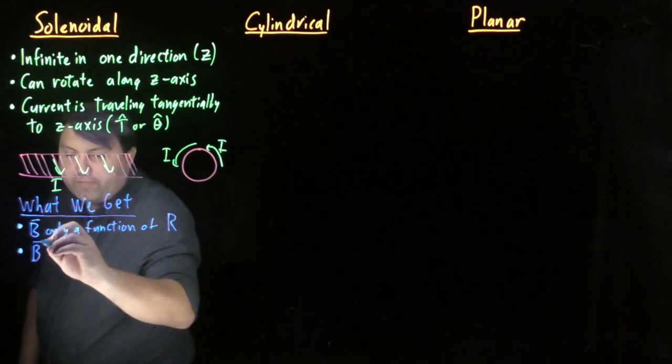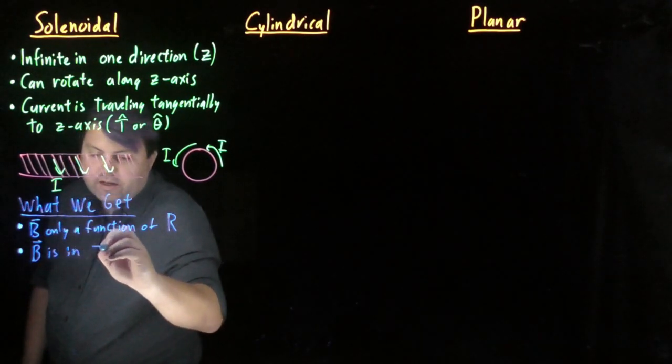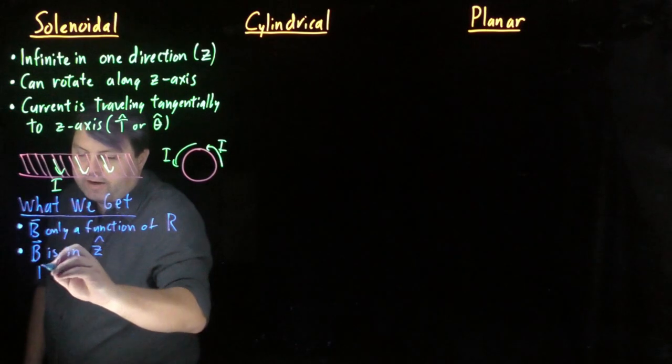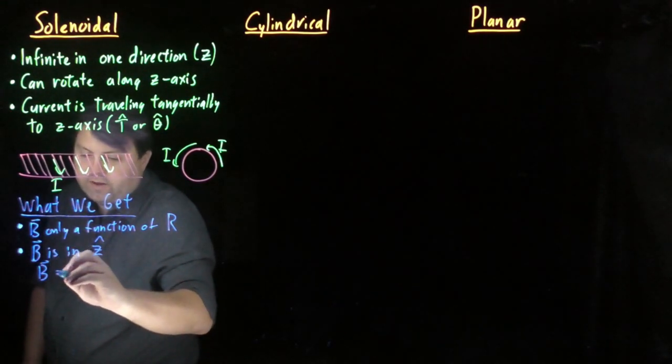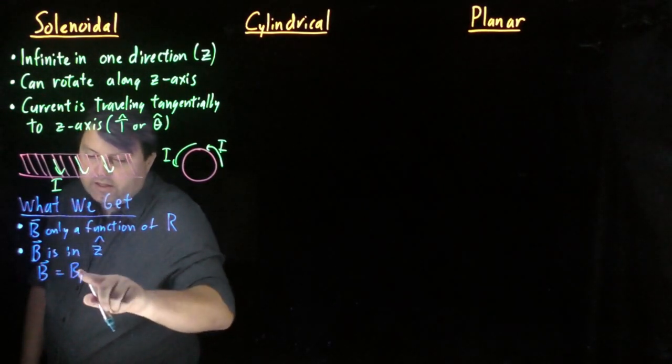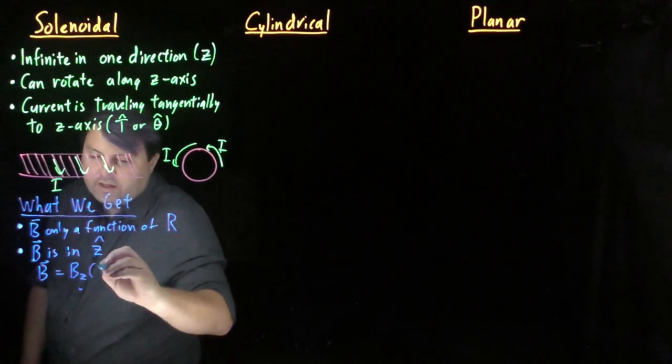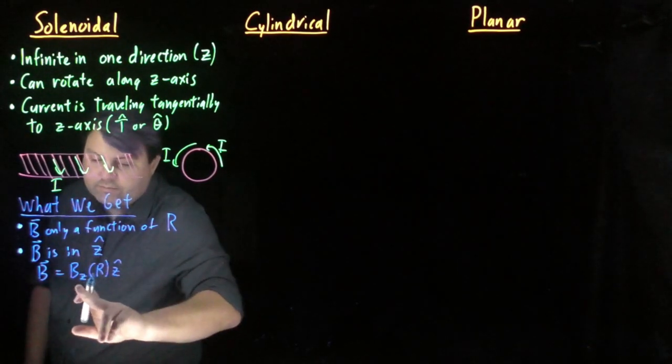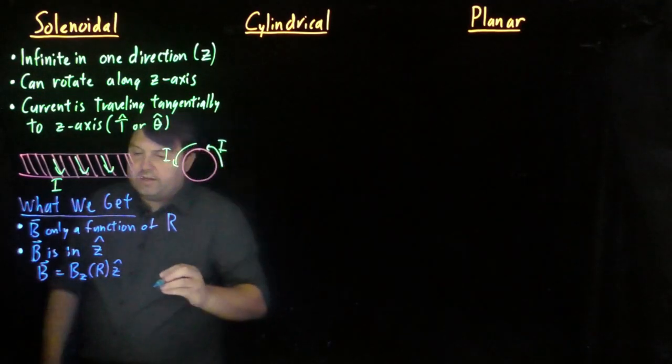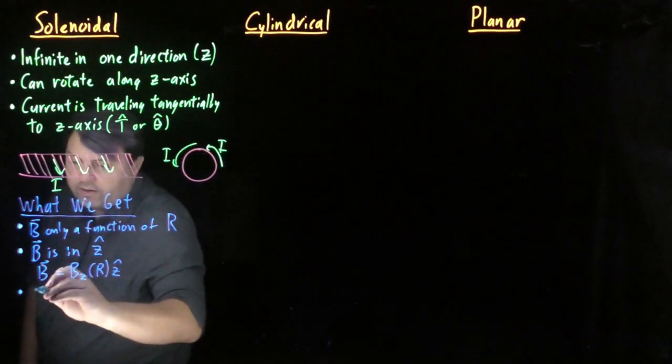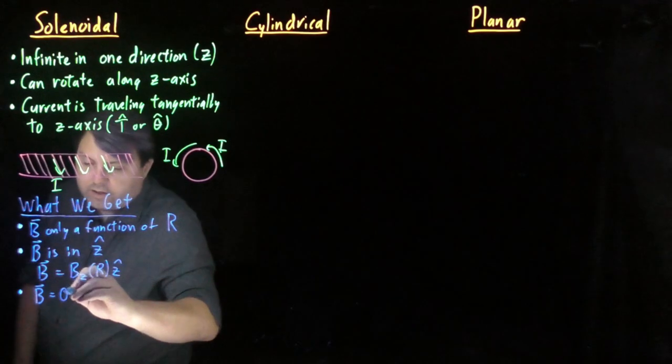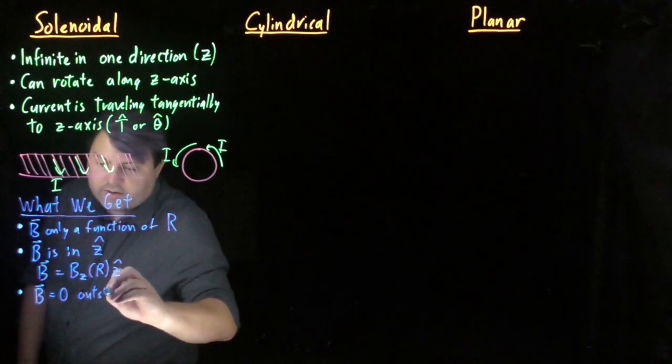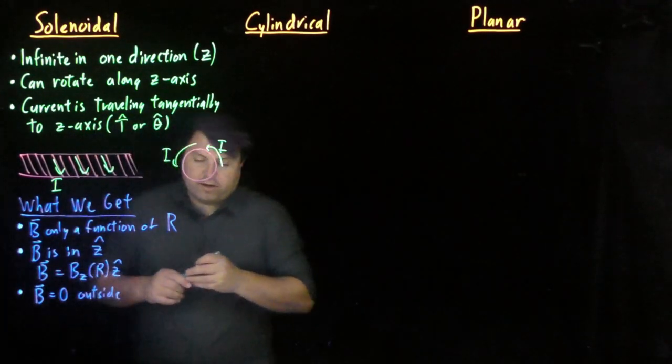What we get is then our magnetic field is in the z-hat direction. So we would write that our magnetic field is in the z direction as a function of R, and we can put a z-hat. Another thing that we get is that our magnetic field is zero outside. And we have another video talking about that.